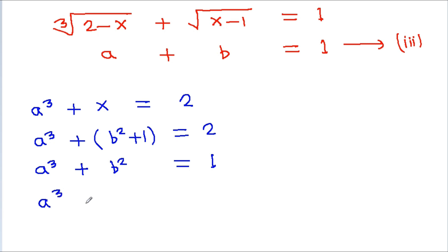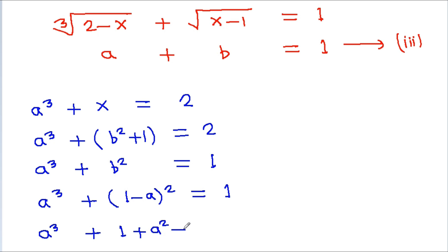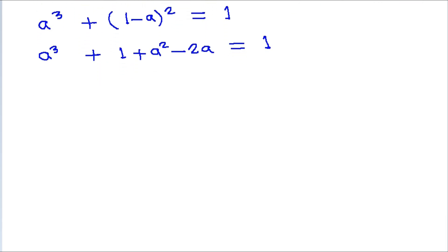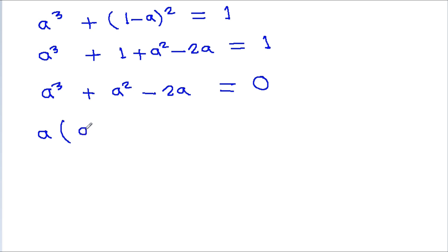From equation 3 we can get b equal to 1 minus a. Substituting, a cubed plus (1 minus a) squared equals 1, which gives a cubed plus 1 plus a squared minus 2a equals 1. Simplifying, a cubed plus a squared minus 2a equals 0.